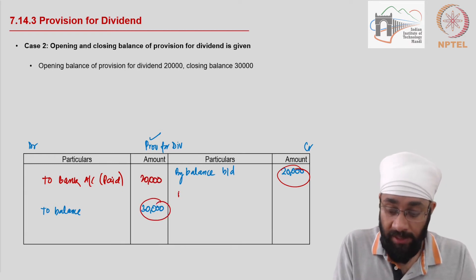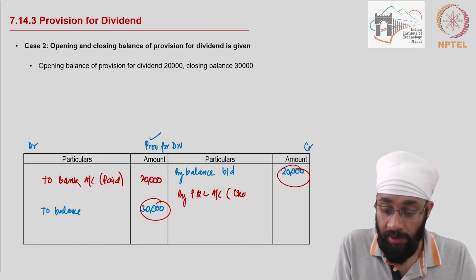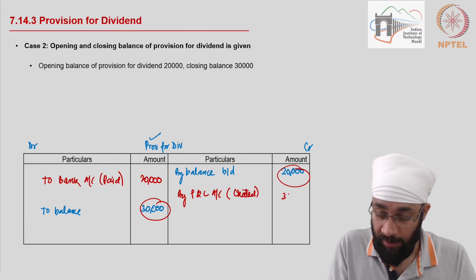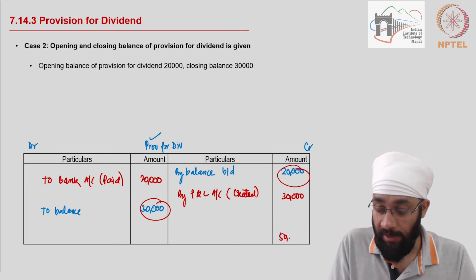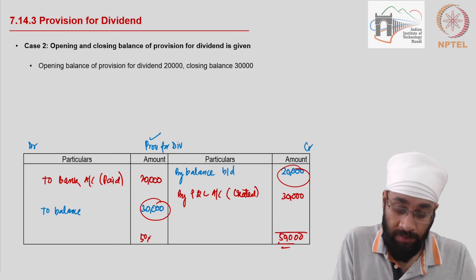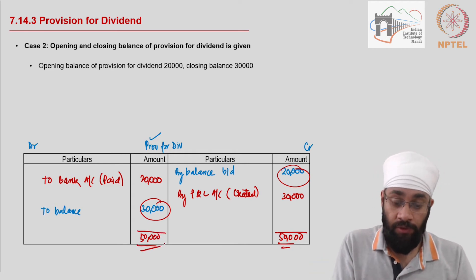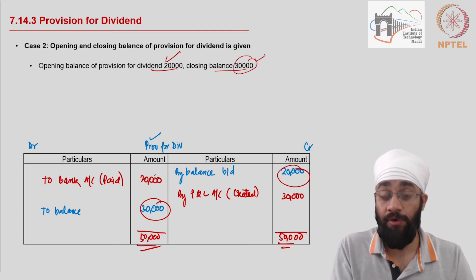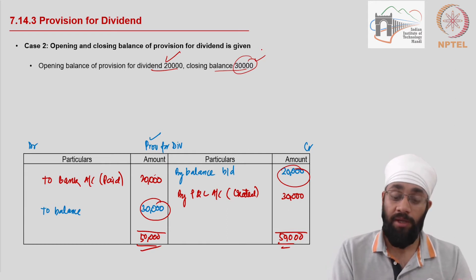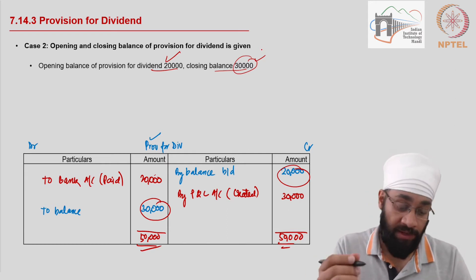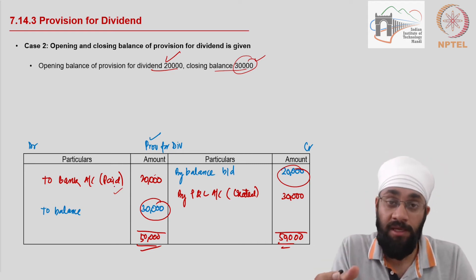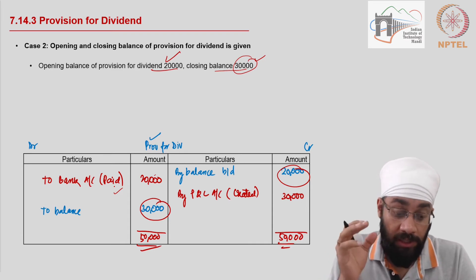The closing balance is the new amount transferred into the provision account from profit during the year — 30,000. This is the provision created. The total has to be equal on both sides. We assume the opening balance is paid during the year and the closing balance is the provision created during the year. Accordingly, the provision is added back into the profit, and the actual dividend paid is taken to the financing activities.